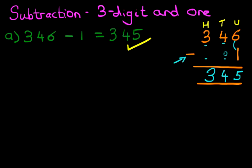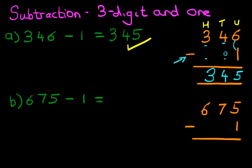Let's look at one more example. What is 675 minus 1? Again, we're going to do this using the vertical format. So let's do that over here. 675 minus 1. And let's label the columns again. We've got units, tens, and hundreds. So that's the first stage done.